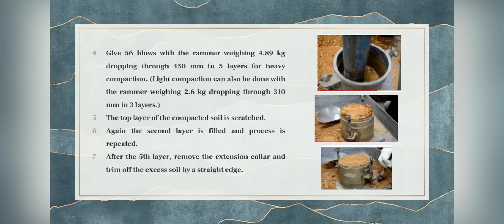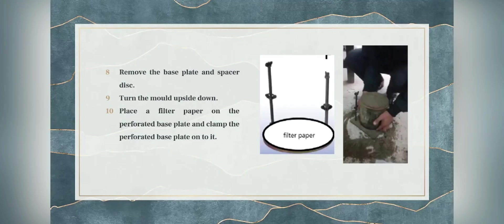Light compaction can also be done with the rammer weighing 2.6 kg dropping through 210 mm in three layers. The top surface of the compacted soil is scratched, the second layer is filled, and the process is repeated. After the fifth layer, remove the extension collar and trim off the excess soil with a straight edge. Remove the base plate and spacer disc, turn the mold upside down, place a filter paper on the perforated base plate, and clamp the perforated base plate onto it.